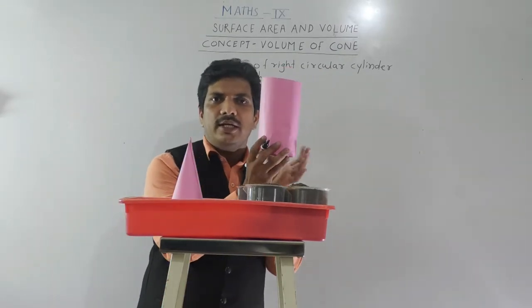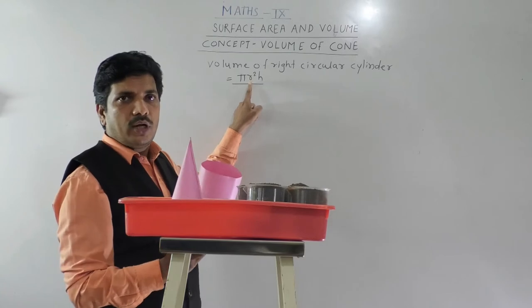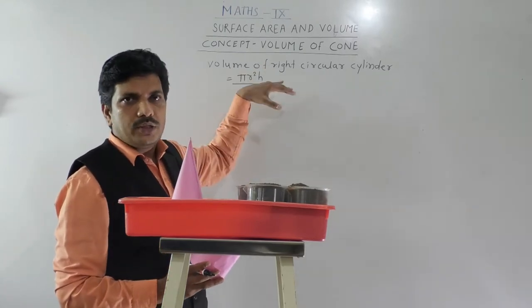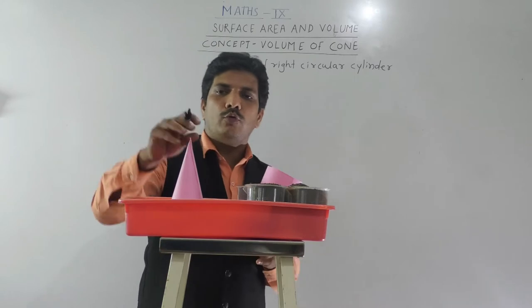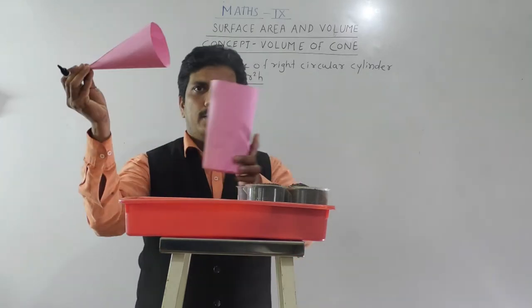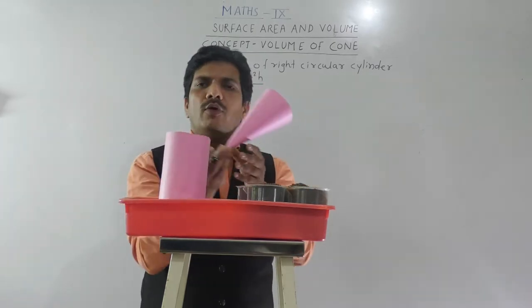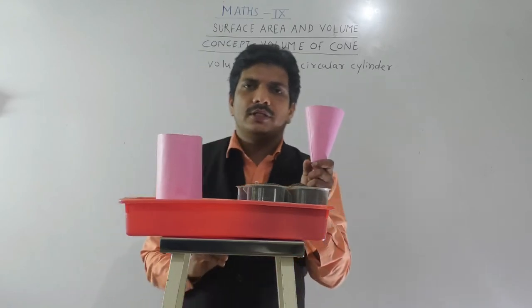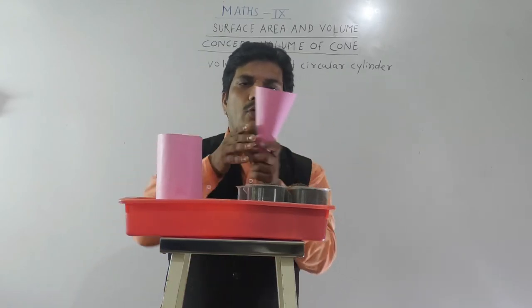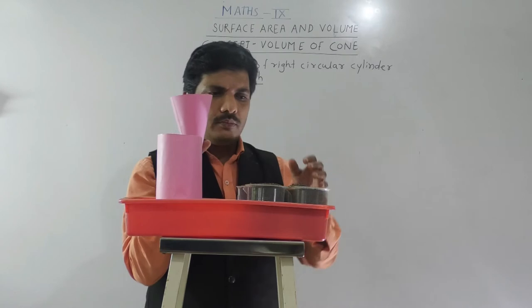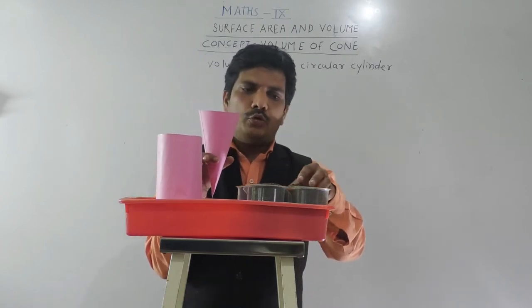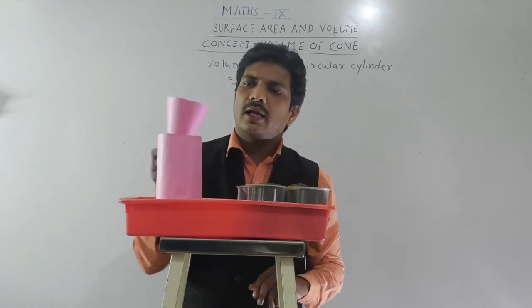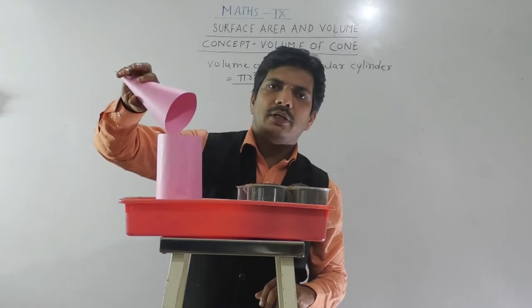This is the volume of the right circular cylinder whose radius is r and height is h. With the help of this, we are going to find out the volume of the cone. For that, we are going to do one simple activity. I have brought here some sand. I am going to put this sand into the cone, then empty it into the cylinder.